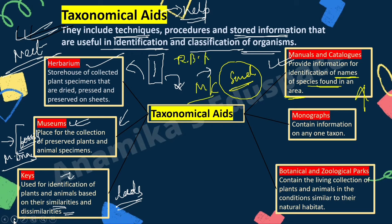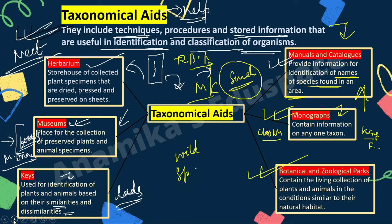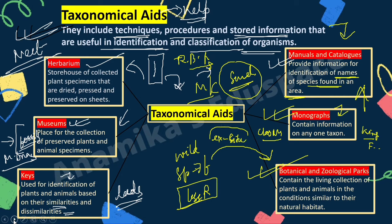Monograph contains information about only one taxon — for example, kingdom Fungi or class Mammalia. Botanical gardens and zoological gardens conserve animals and plants whose wild specimens are getting extinct — this is ex-situ conservation. They contain living collections of plants and animals in conditions similar to their natural habitat.